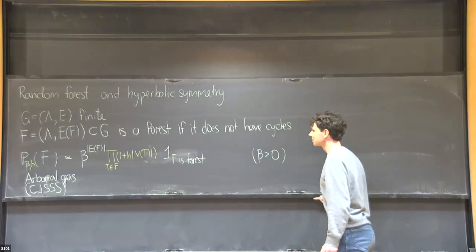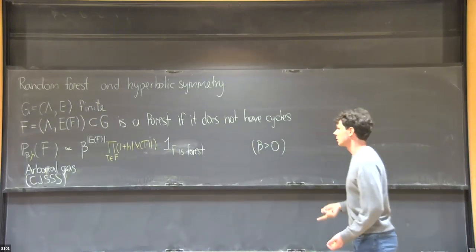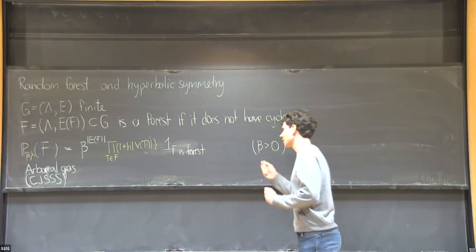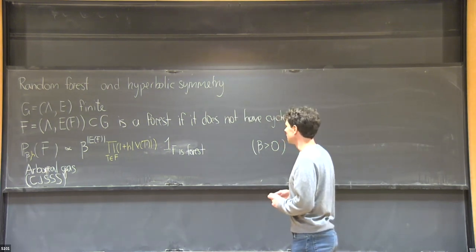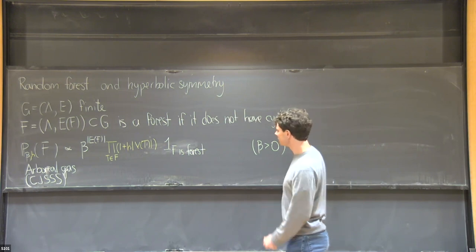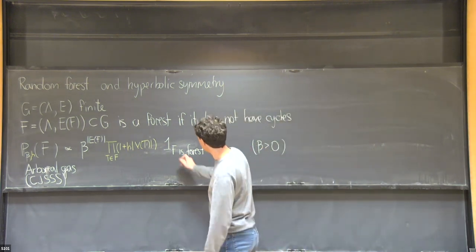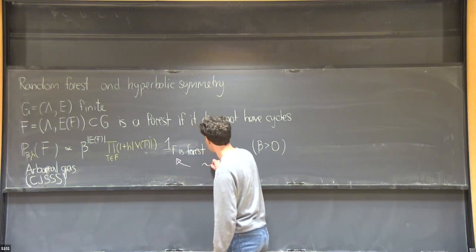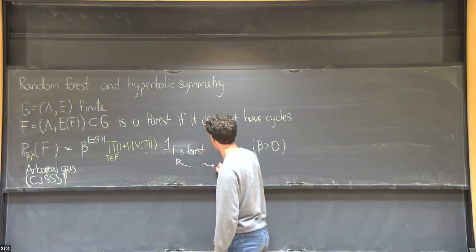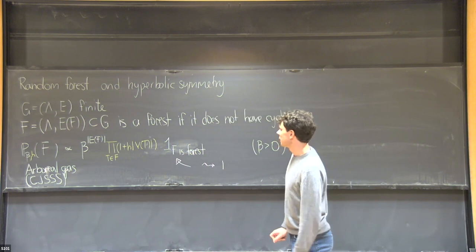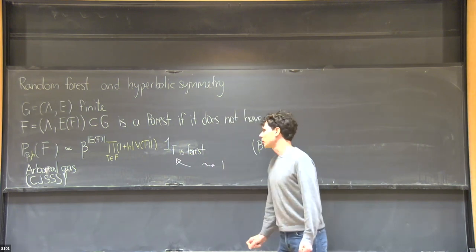So this is the model — the arboreal gas. Let me say what this model is related to. If you drop the indicator function — replace it by one — then this is just Bernoulli bond percolation.